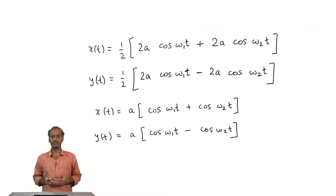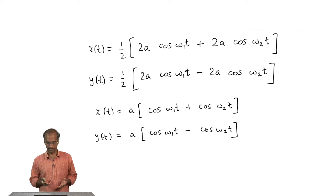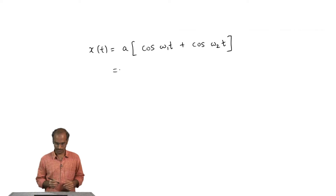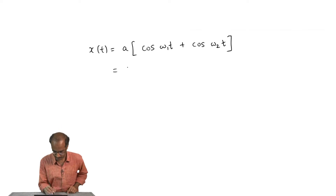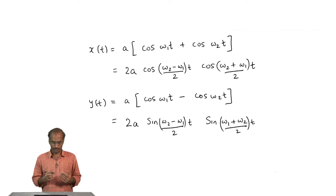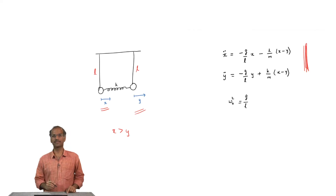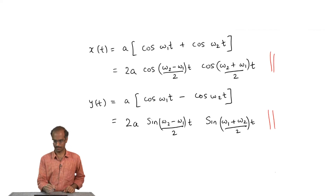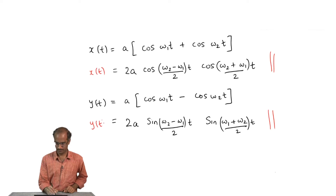Now we can use the sum-to-product trigonometric identities — cos(A) + cos(B) and cos(A) − cos(B) — to interpret the dynamics. Using these identities I get a combined expression for x(t) and a similar expression for y(t). Since x and y are simply the displacements of the first and second pendula, I have finally managed to get expressions for the displacement of each pendulum. We should plot both of them together and see what it reveals.